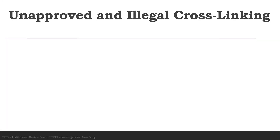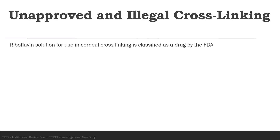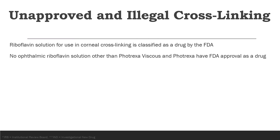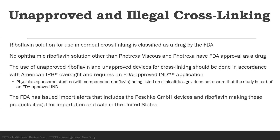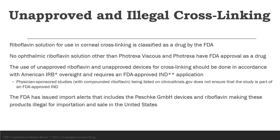Unapproved and illegal cross-linking is something we certainly want to avoid. Any riboflavin solution used in cross-linking is classified as a drug by the FDA. No other riboflavin solution other than Photrexa Viscous and Photrexa has FDA approval as a drug, and that's important. Providers who try to use unapproved systems under the guise of IRB or sponsored studies must go through a very strict FDA requirement for approved IND applications. It is also unlawful for a compounding pharmacy to make or sell a copy of the Glaucos FDA-approved riboflavin — so anything they're making is not going to be that formula.